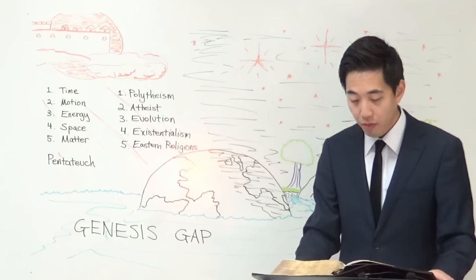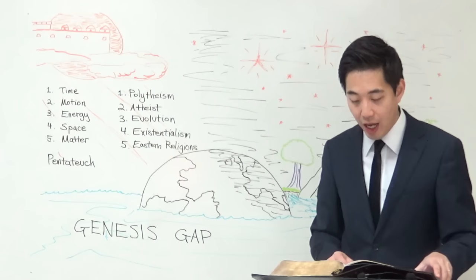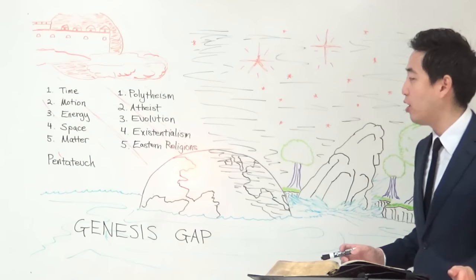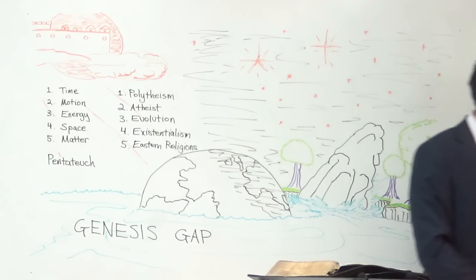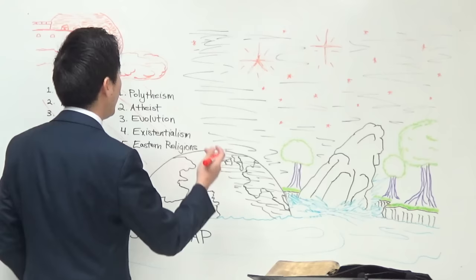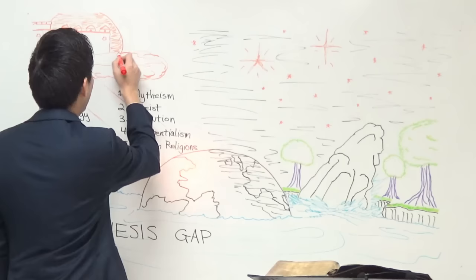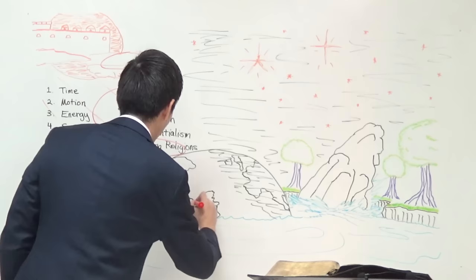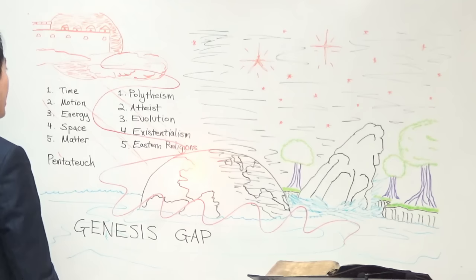Continuing at verse 2: "And the Spirit of God moved upon the face of the waters." Notice here that the Spirit of God is starting to move now. So where there originally was destruction, now there is spirit — which is like breath, like "ruach" — that's where life is received. God is coming down and moving on the face of the waters. He's about to do something.